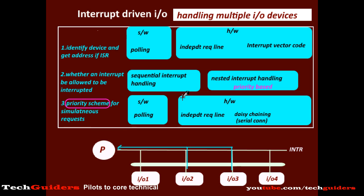Next we shall discuss one method for priority-based interrupt-driven I/O using hardware. This is a serial connection method known as daisy chaining, which helps to handle multiple simultaneous requests based on priority.